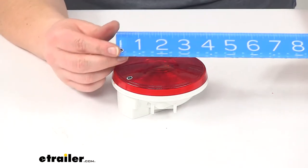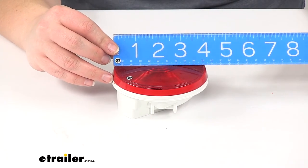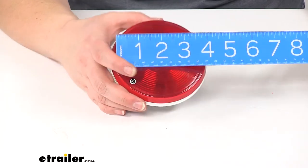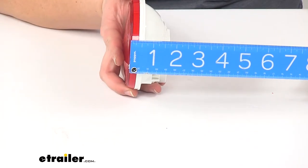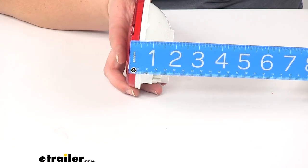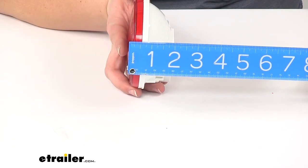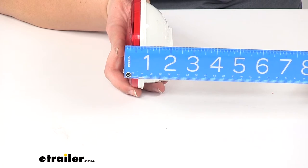And then as far as our dimensions, it's going to be four and a quarter inches in diameter and about two and a sixteenth in depth going to that top of that lens there.